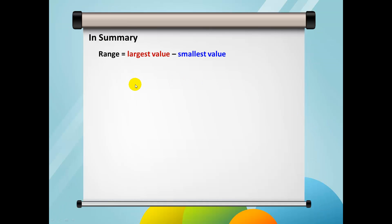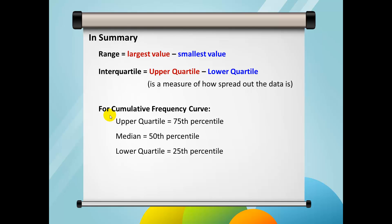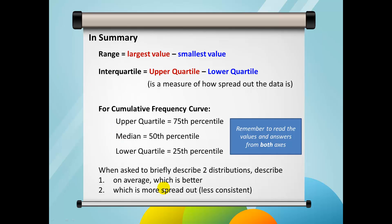In summary, the range is given by the largest value minus the smallest value, and the interquartile range is equal to the upper quartile minus the lower quartile — it is a measure of how spread out the data is. For cumulative frequency curves, the upper quartile uses the 75th percentile, the median uses the 50th percentile, and the lower quartile uses the 25th percentile. Do take note that you must remember to find the values and read the answers from both axes. Finally, when asked to briefly describe two distributions, talk about the median by writing which is better on average, and talk about the interquartile range by writing which is more spread out or less consistent, or alternatively which is less spread out or more consistent.